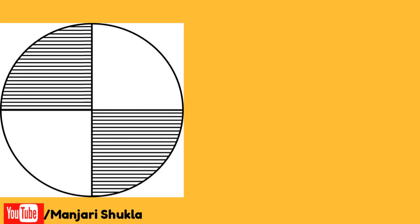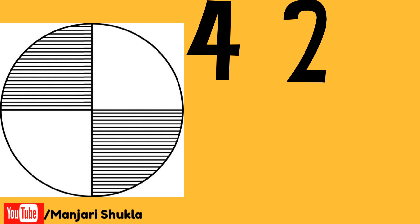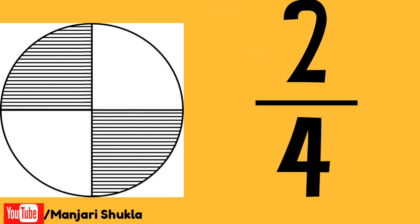This is another example. Let's count all the total pieces which are 4 and the shaded pieces are 2. The fraction would be: 4 will come as the denominator because it tells us how many total pieces are there, and 2 will come as the numerator resembling the shaded parts.